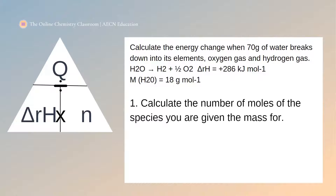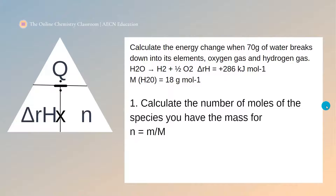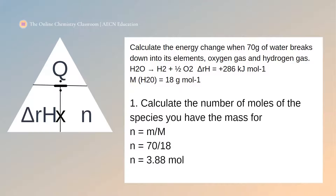So the first step again is to calculate the number of moles for the species you're given, which in this case is the mass of water. We use number of moles equals mass divided by molar mass: 70 grams divided by 18 grams per mole. That means in this reaction we have 3.88 moles of water decomposing.